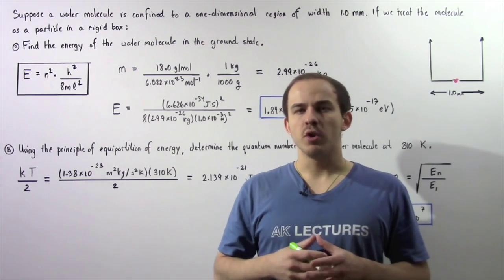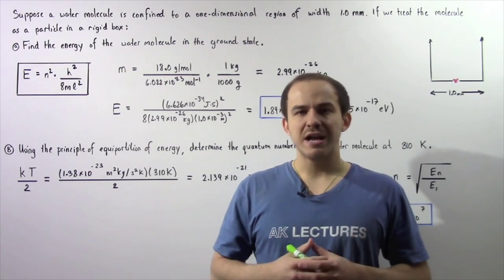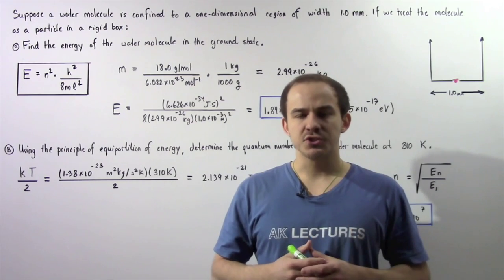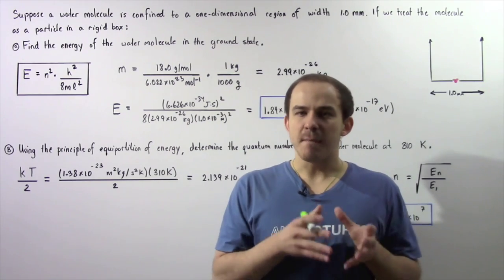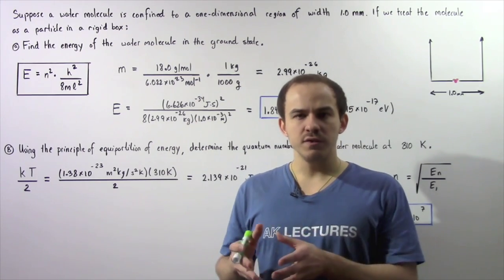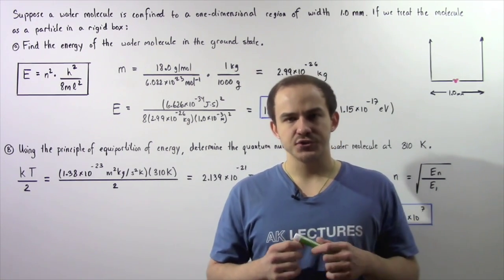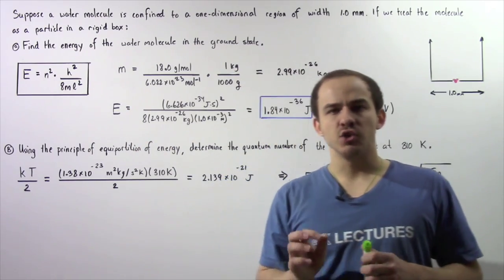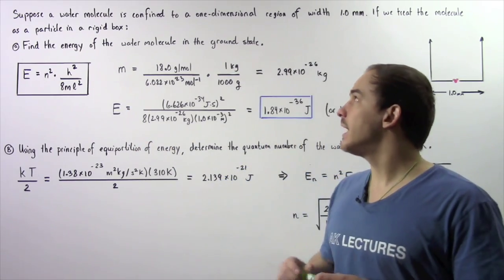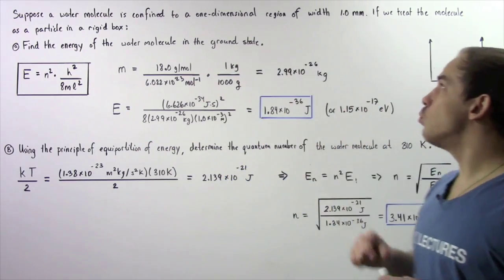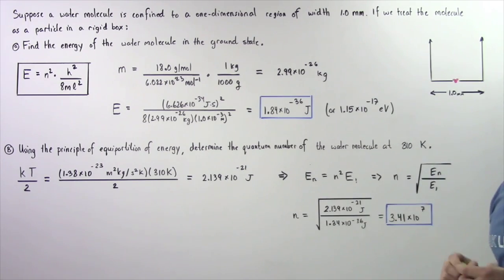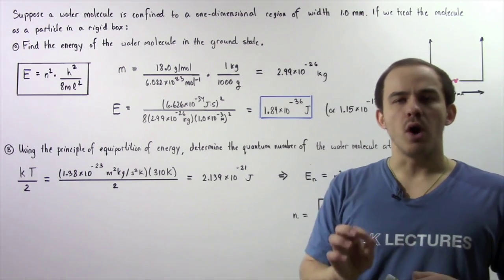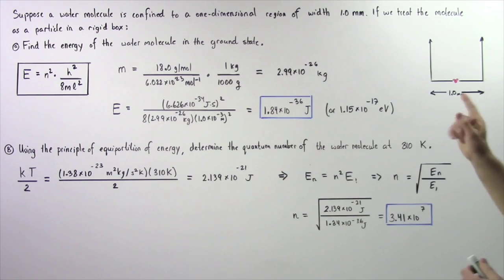In this example, we're going to apply the concept of a particle in a rigid box to a molecule moving in some region of space. Suppose a water molecule is confined to a one-dimensional region of width given by one millimeter.